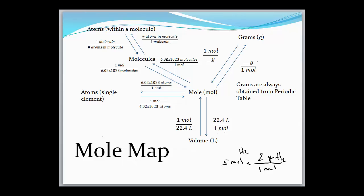Moles to molecules, we use Avogadro's number. Moles to atoms, we also use Avogadro's number. Now if we're looking for atoms within a molecule, we would use the number of atoms in that molecule per one molecule — and we'll do at least one problem like that. You can refer back to this mole map as you're doing these problems; it wouldn't be a bad idea to print it out while working through the practice packet.